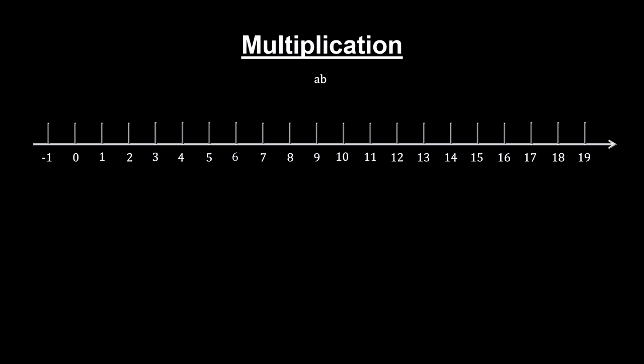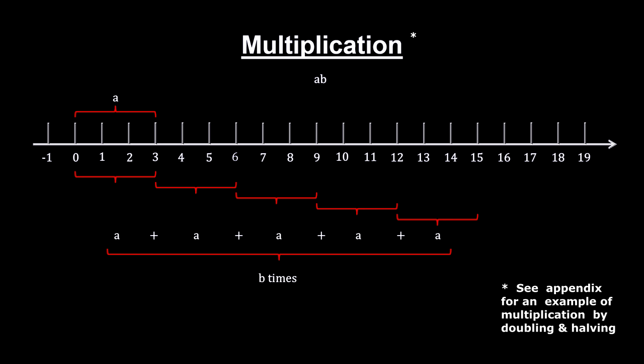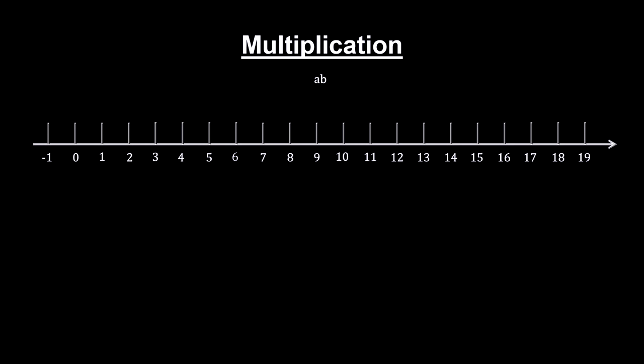We can also define multiplication in terms of addition, which is based on counting. A times B says add the number A to itself, B times. Here we are starting with 3 and adding it to itself 5 times. Doing it one time leaves it unchanged. Thus the number 1 is the multiplicative identity, like 0 was the additive identity. But what does it mean to add a number to itself 0 times? To deal with this, we define a number being added to itself 0 times to be the number 0.